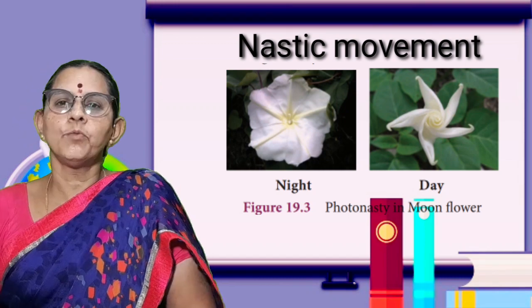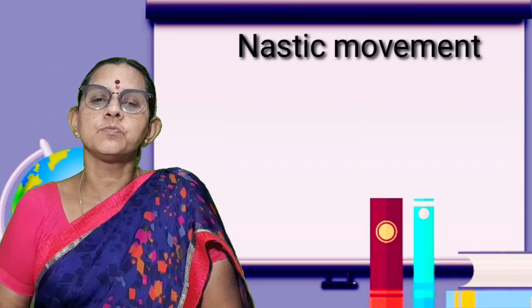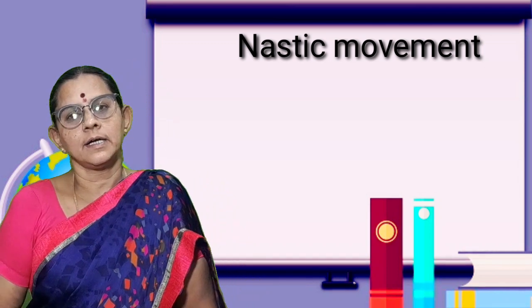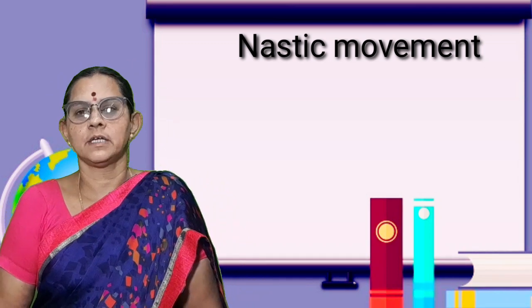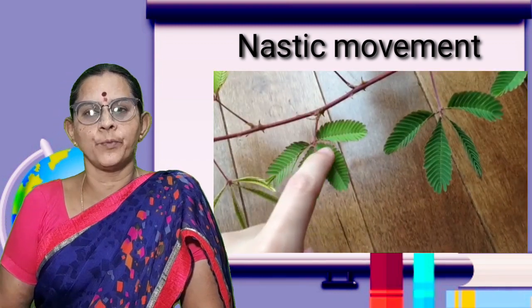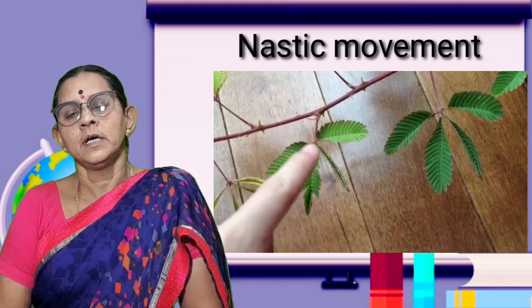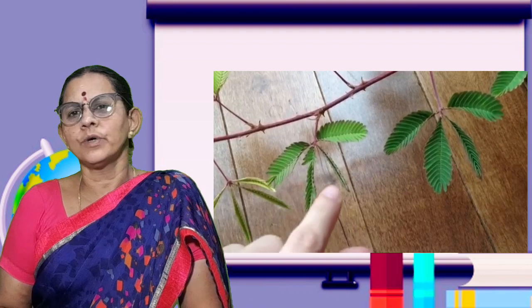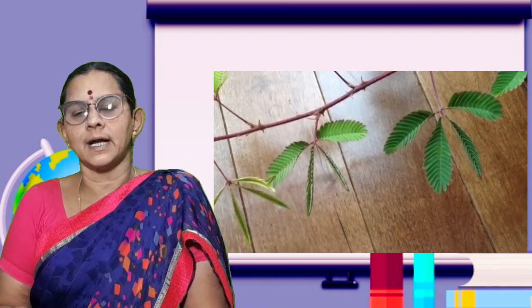Next, thigmonasty. Thigmonasty is movement in response to touch. A good example is Mimosa pudica — when you touch it, the leaves fold regardless of the direction of touch. This is thigmonasty.